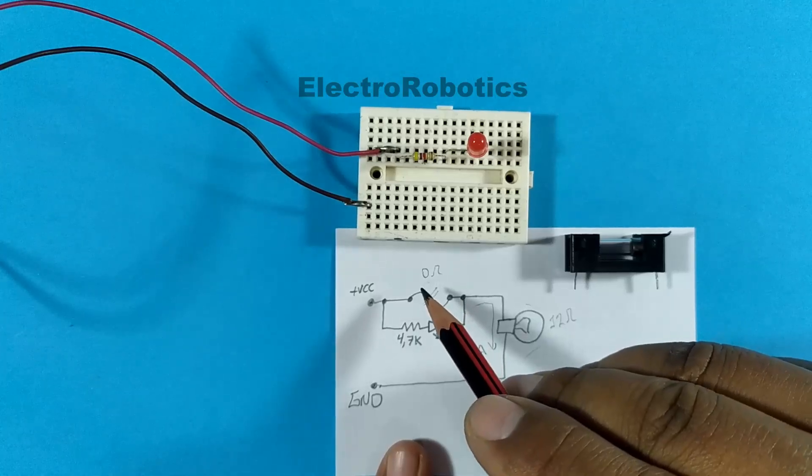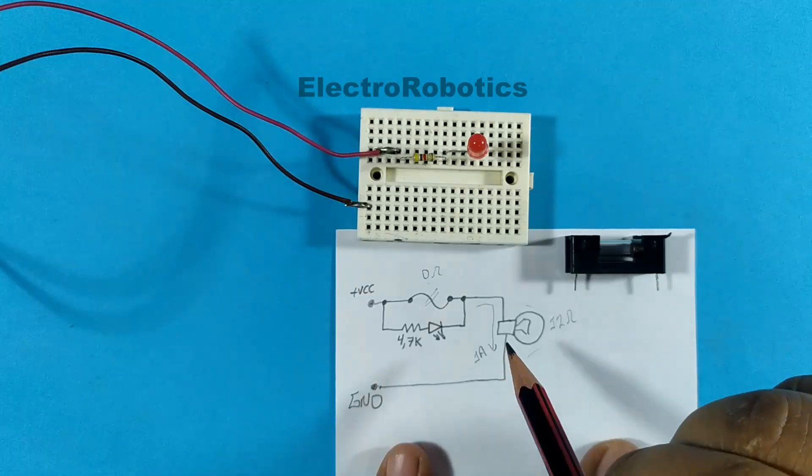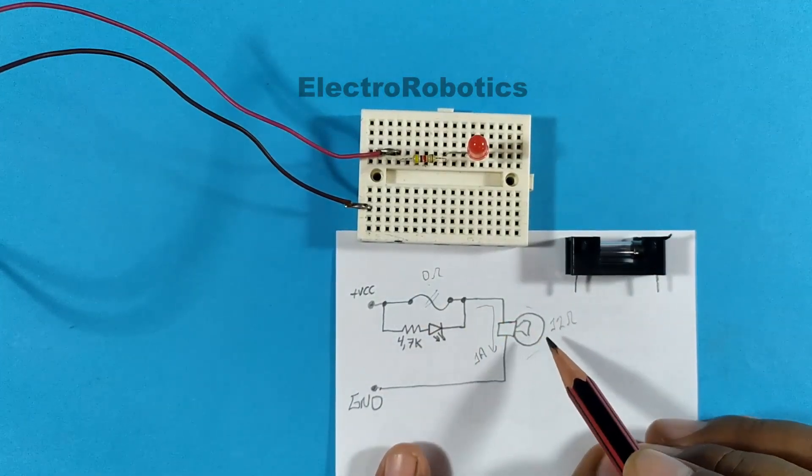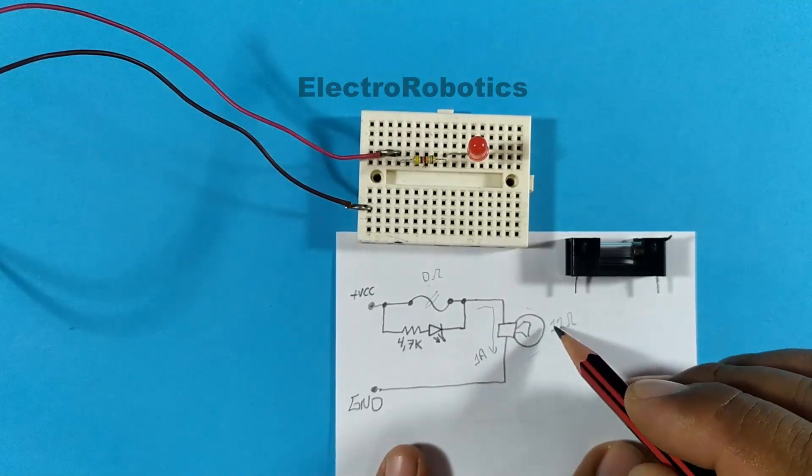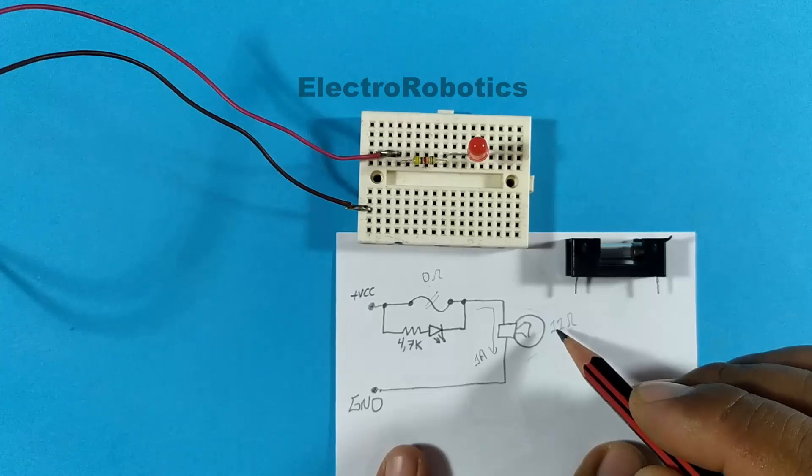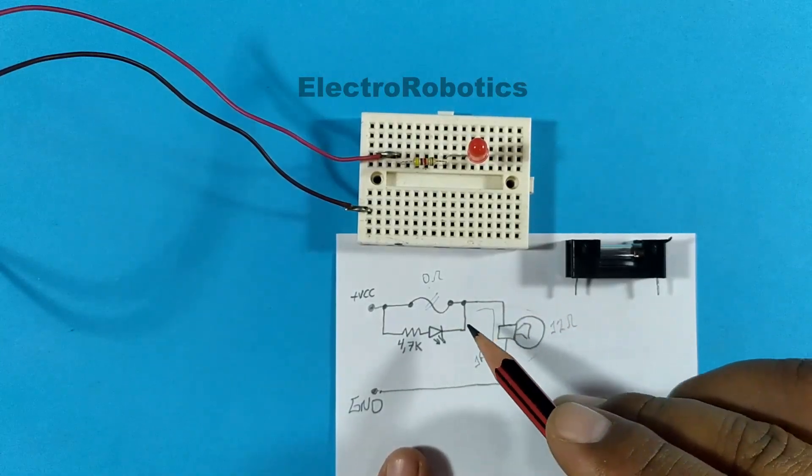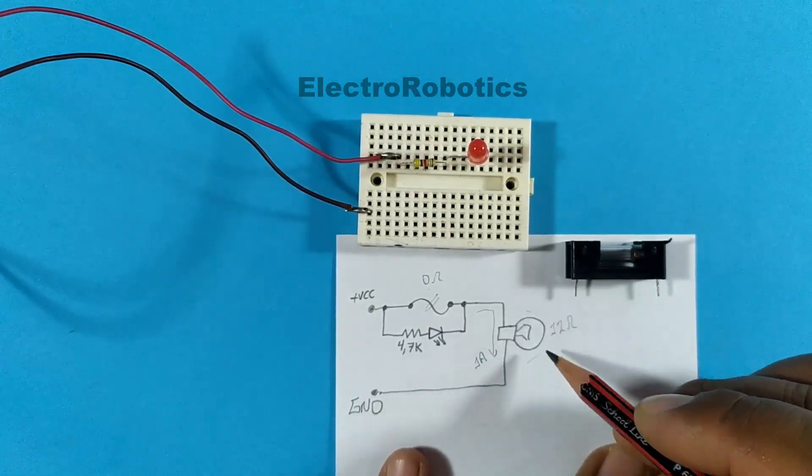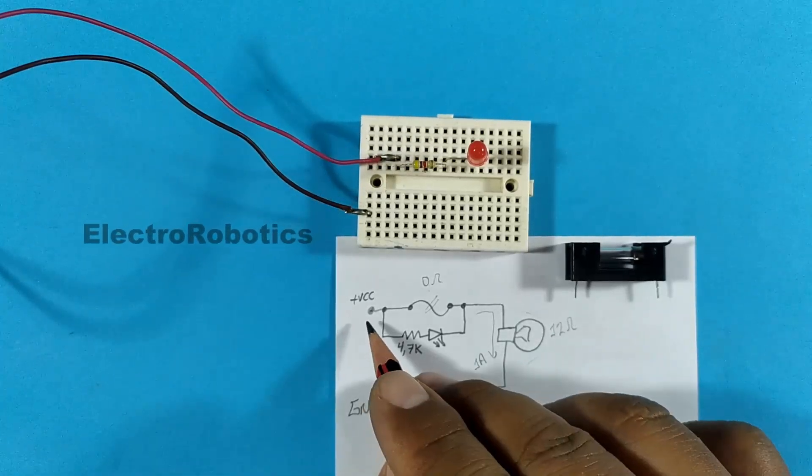When the fuse is in good condition, it has 0 Ohms of resistance, and the load we want to protect must be connected in series to it. The load usually has to have a much higher resistance than the fuse has, which is approximately 0 Ohms. If we take into account a 1 watt light bulb, we will have a resistance of 12 Ohms if we power it with 12 volts.